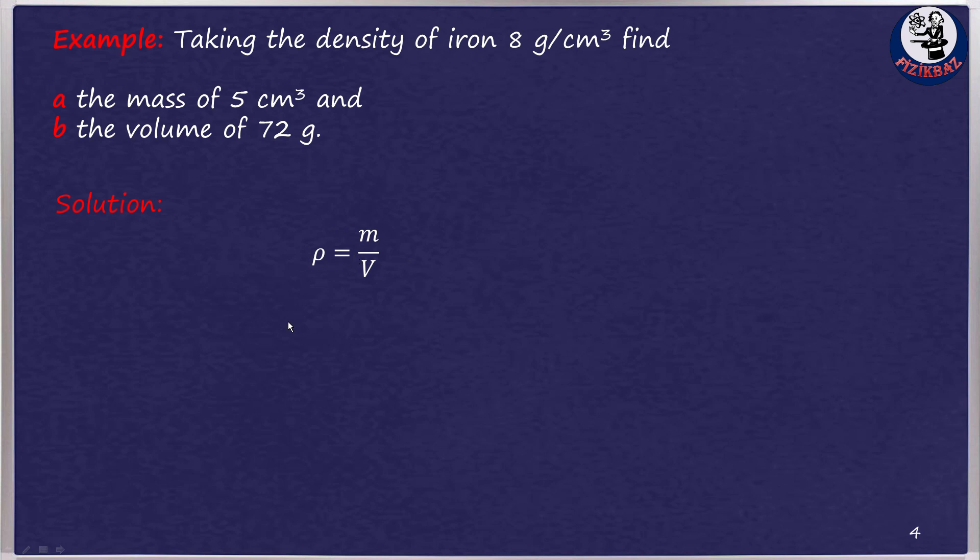For A, we can convert the formula that gives the density to give the mass as follows. If we replace the values of the density and volume in the formula, we get m = ρV = 8 × 5 = 40g.